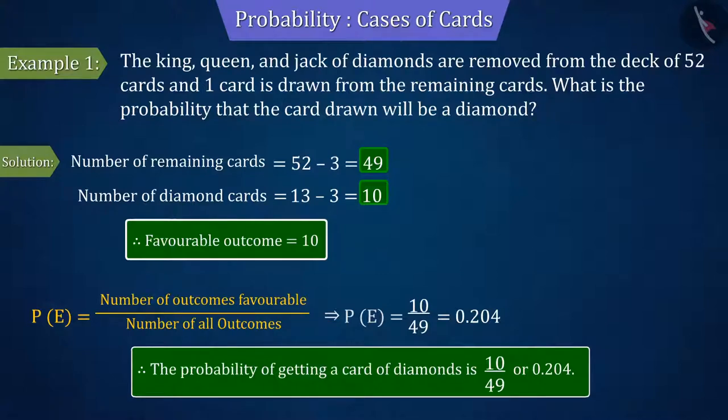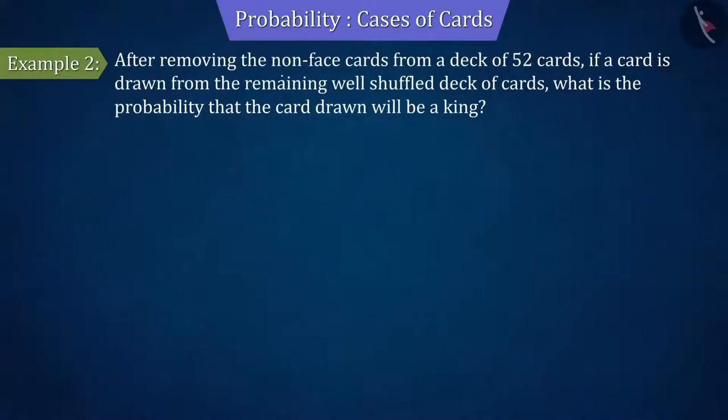Let's discuss another example. After removing the non-face cards from a deck of 52 cards, if a card is drawn from the remaining well-shuffled deck of cards, what is the probability that the card drawn will be a king?